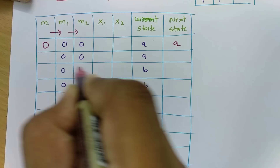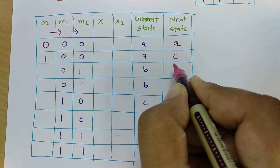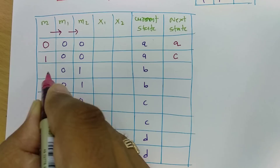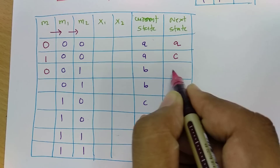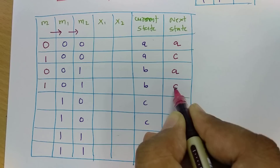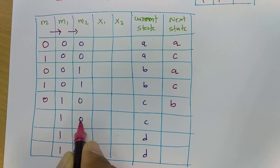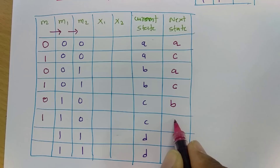If you insert bit 1 with current state 00, then the next state will be 10, which means state C. If current state is 01 (state B) and you insert 0, then the next state will be 00, meaning state A. If you insert bit 1, the next state will be 10, meaning state C. If current state is 10 and current input is 0, the next state will be 01, which is state B.